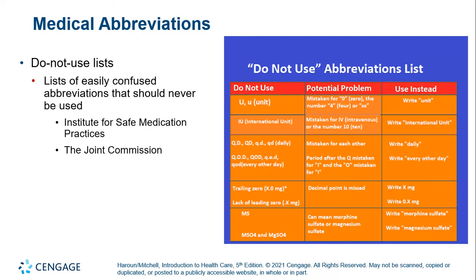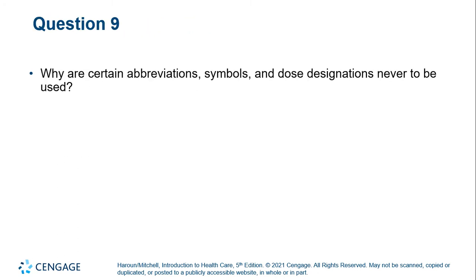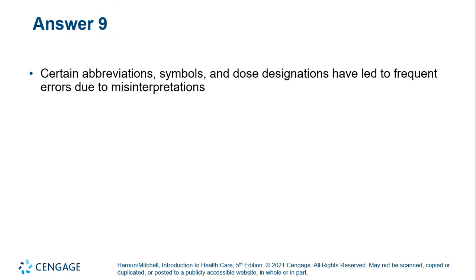'QD' and 'QOD' can be mistaken for each other, so you should write 'daily' or 'every other day.' A trailing zero is also on the list because you can miss the decimal point — never use a trailing zero, and never put a zero after the decimal point if that's the final number to the right. 'MS' can mean a couple of different things, so you have to write out whether you're talking about morphine sulfate or magnesium sulfate. Certain abbreviations, symbols, and dose designations are never to be used because they've led to frequent errors.